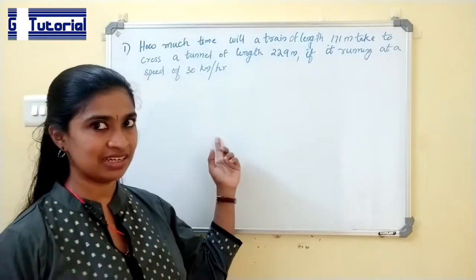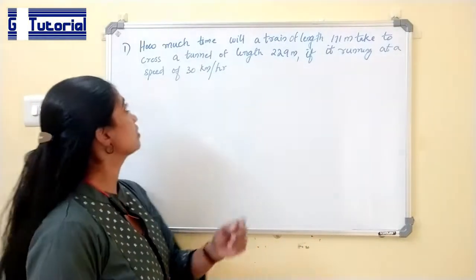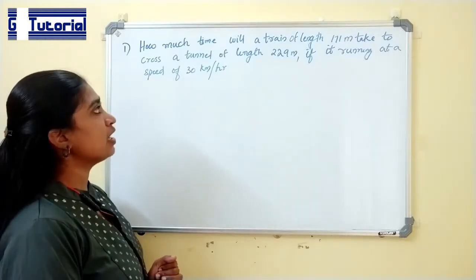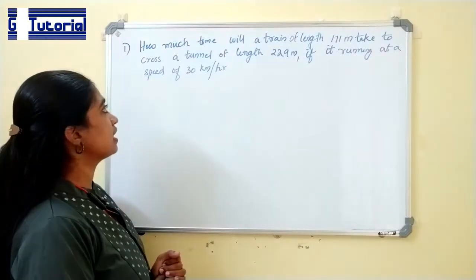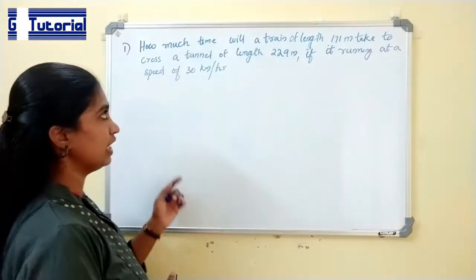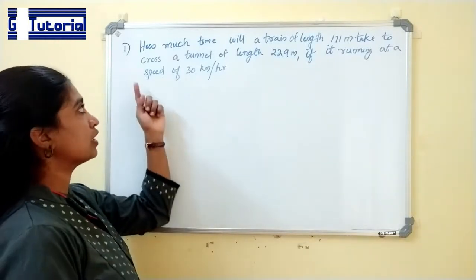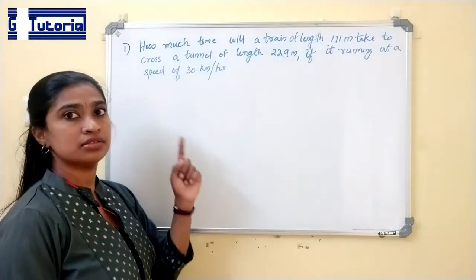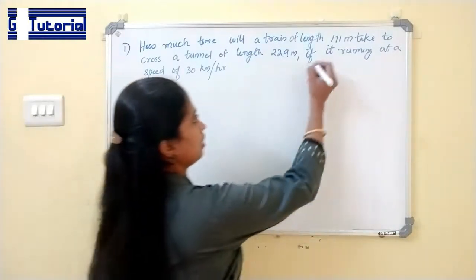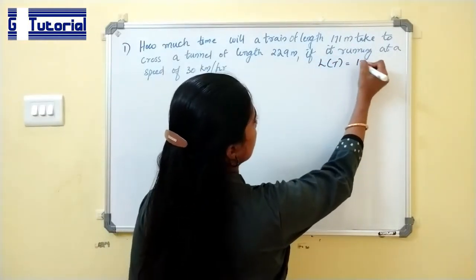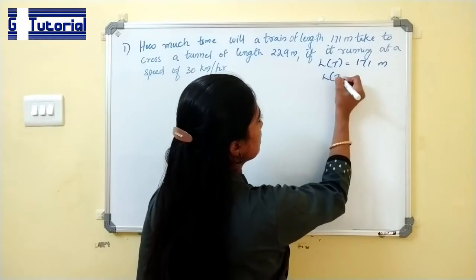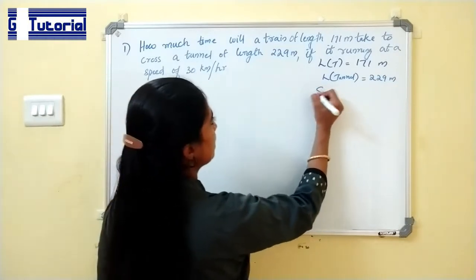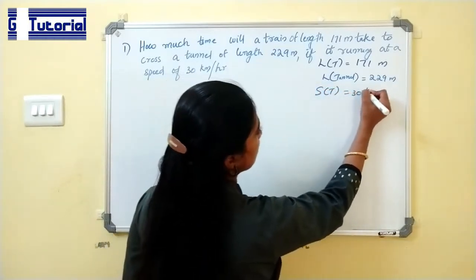This is the first problem. We are going to take a look at the exam question: How much time will a train of length 171 meters take to cross a tunnel of length 229 meters at a speed of 30 km per hour?